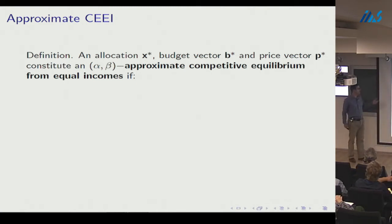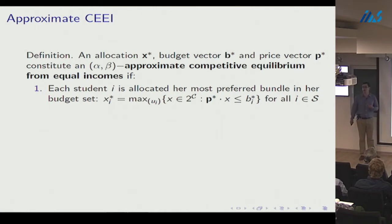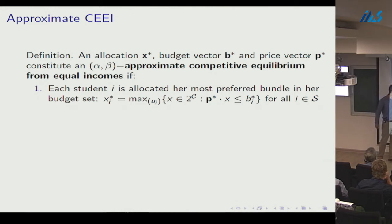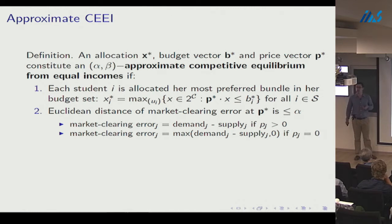First, each student is allocated exactly her most preferred affordable bundle — the bundle x_i* that maximizes her utility over all bundles whose price is weakly less than her budget. Second, the market clears to within Euclidean distance alpha — market clearing error is small. Markets clear exactly when positive-price goods have demand equal to supply, and zero-price goods have demand weakly less than supply; market clearing error is the distance from this ideal.